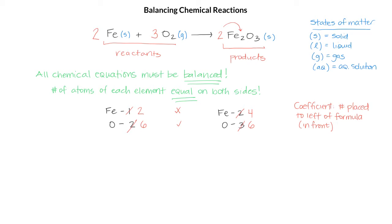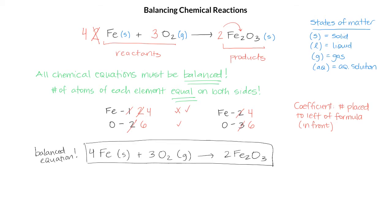Since we have 4 iron on the right and only 2 iron on the left, let's change this 2 to a 4 so that my iron is now balanced again. Now we have a balanced equation: 4 Fe plus 3 O2 gives us 2 Fe2O3.